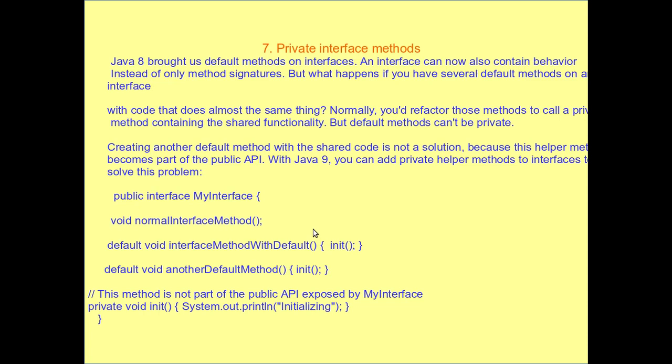Sixth, private interface methods: the existing interface also has default methods, so the interface can contain behavior instead of only method signatures. But when several methods of the interface do almost the same thing, normally you would refactor those into a shared private method. However, default methods cannot be private — this is an important issue that Java 9 addresses.